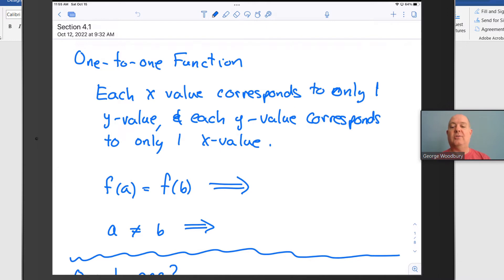What we know is that if f(a) equals f(b), that implies that a is equal to b. There's no other way for that to happen.